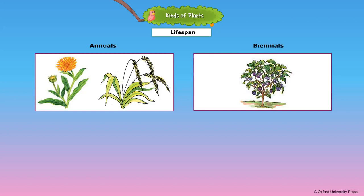During the first year, a biennial plant prepares and stores food. During the second year, it produces flowers, fruits, and seeds. Examples of biennial plants are carrot, radish, and brinjal.